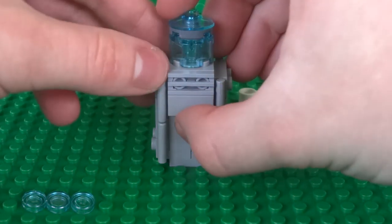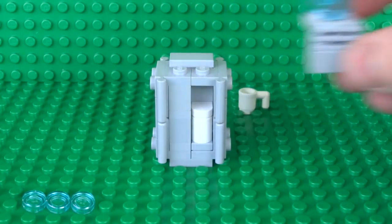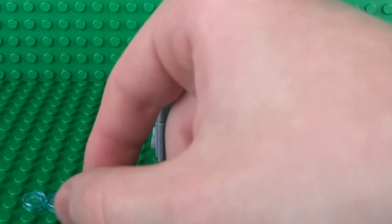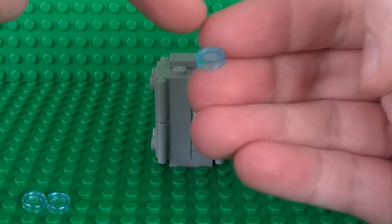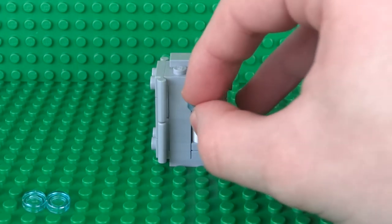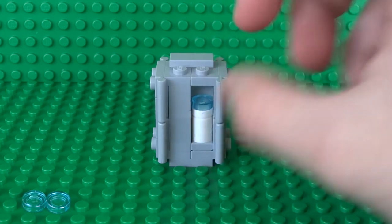So to reload your working water cooler and dispenser, just simply remove this top section and now you can insert your water pieces. So for this, I'm using some of the flat 1x1 round tiles.